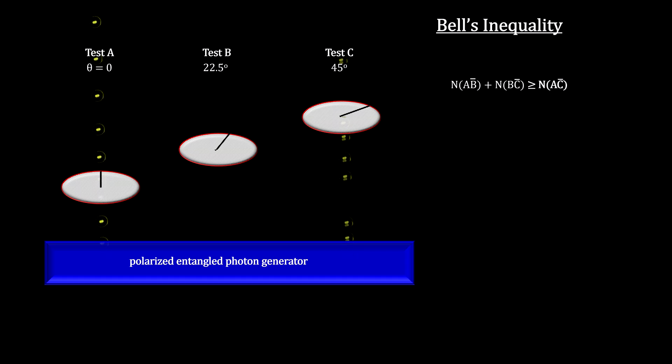The entangled photons then entered lens C, polarized at 45 degrees. 50 passed through, and 50 were blocked, so the number in A not C was 50.